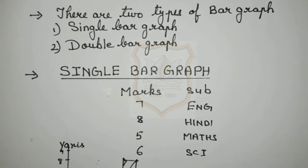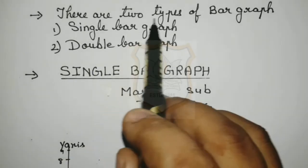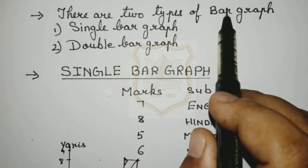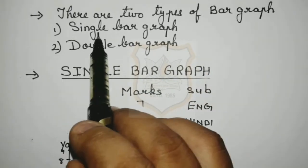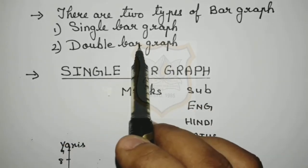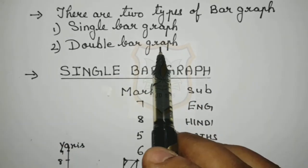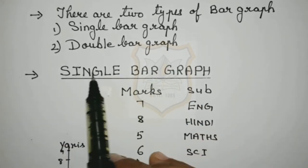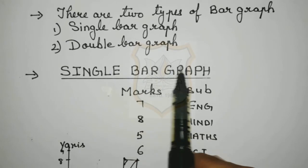Now students, I will tell you how to draw a bar graph and also how many types of bar graph there are. There are two types of bar graph: the first one is a single bar graph and the second one is a double bar graph. First we will discuss the single bar graph.